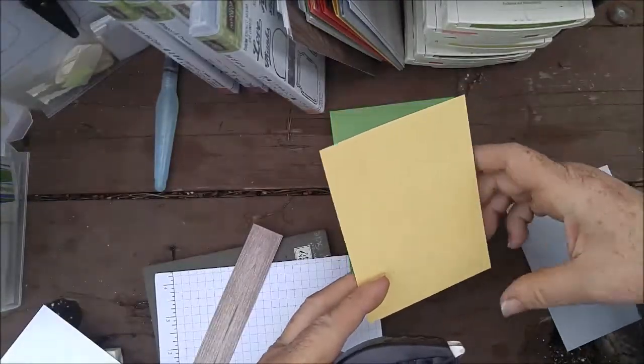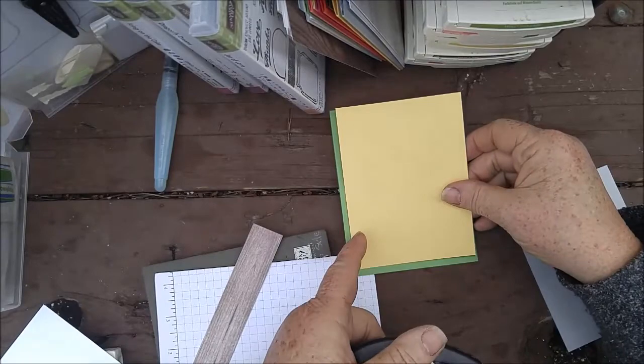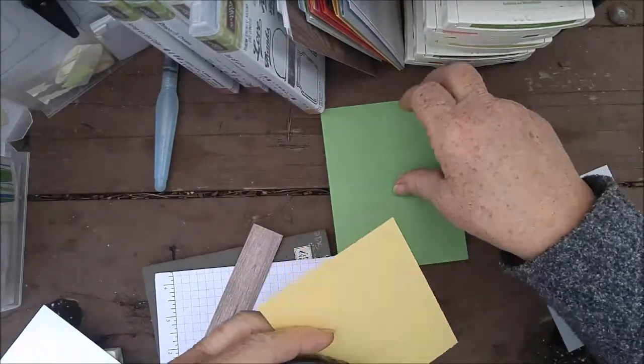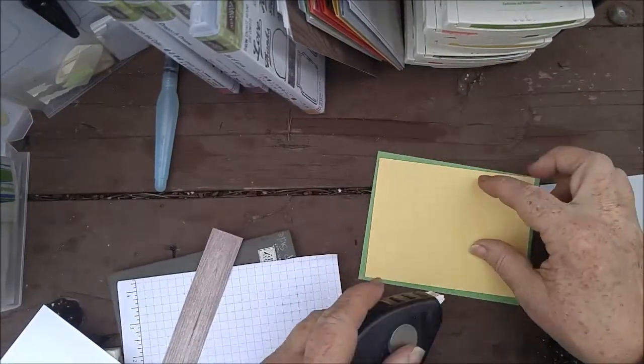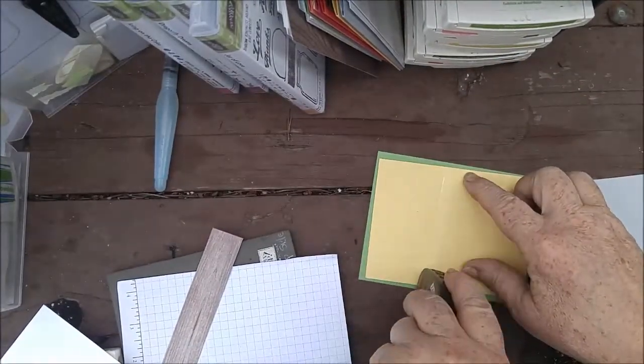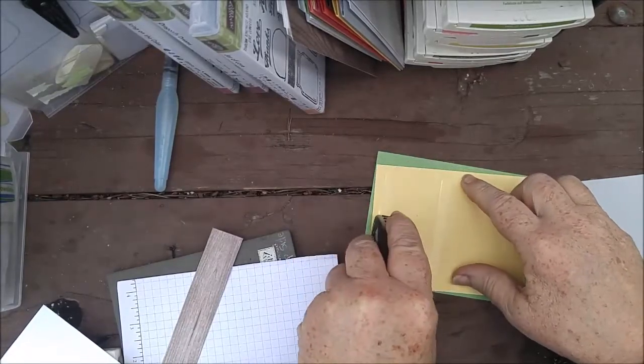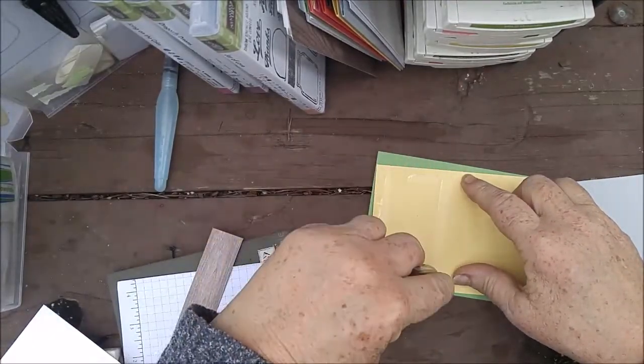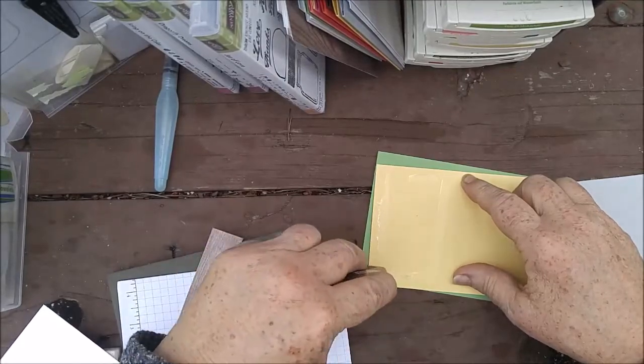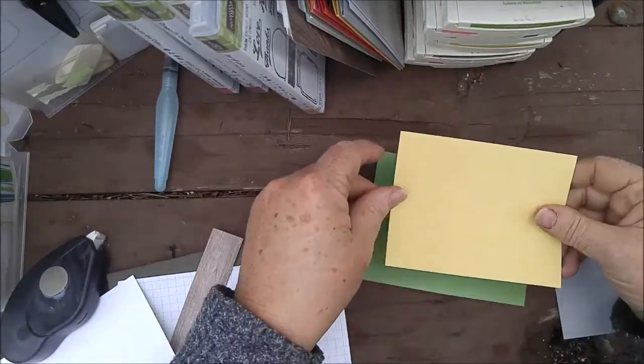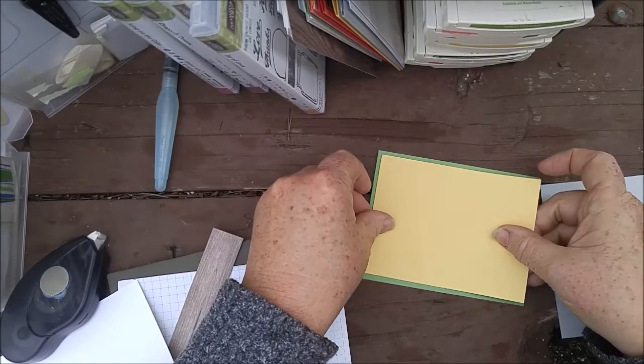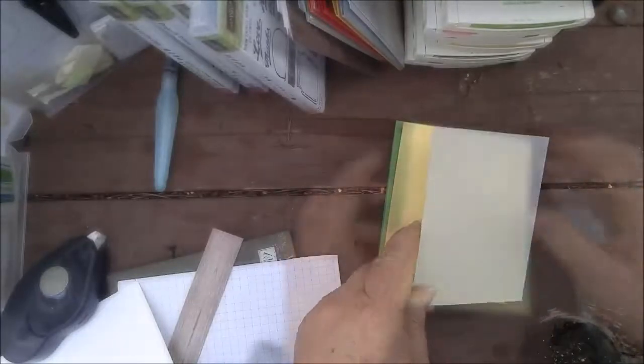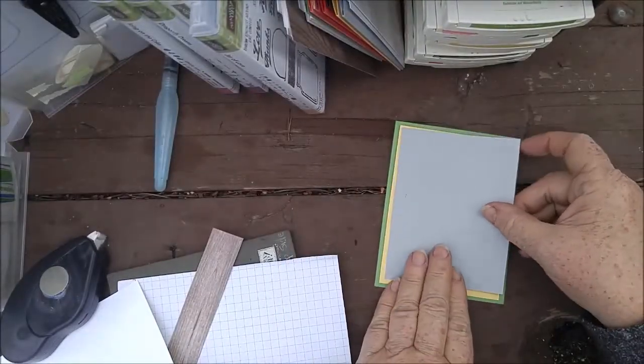So I'm going to layer my Sew Saffron just on this bottom half. And I'm going to kind of place it where I want it so I don't go beyond where I want the adhesive. And then I'm going to wait to adhere the Smoky Slate for a little bit until I decide what I'm going to do with my card.